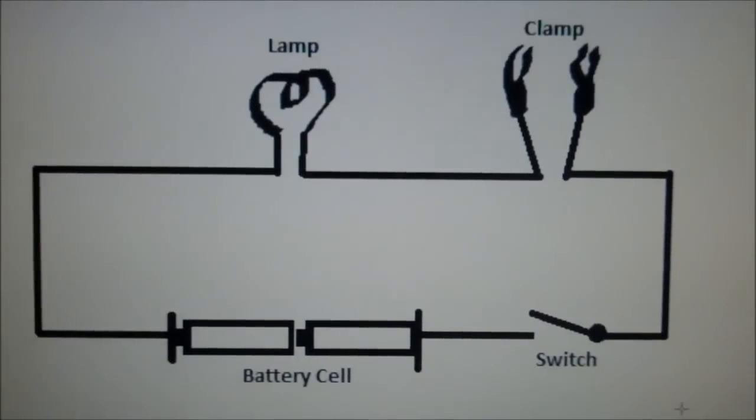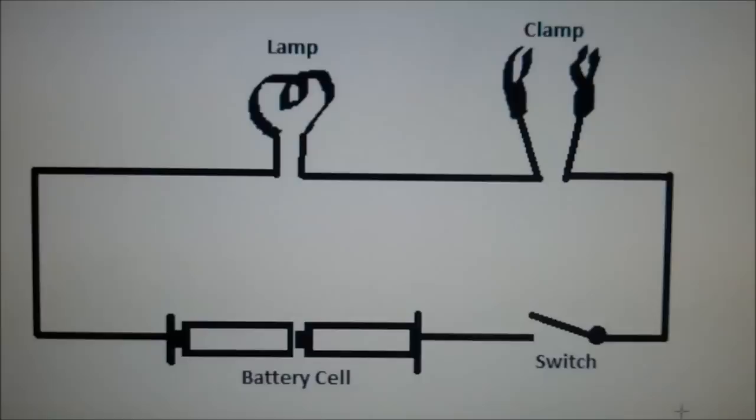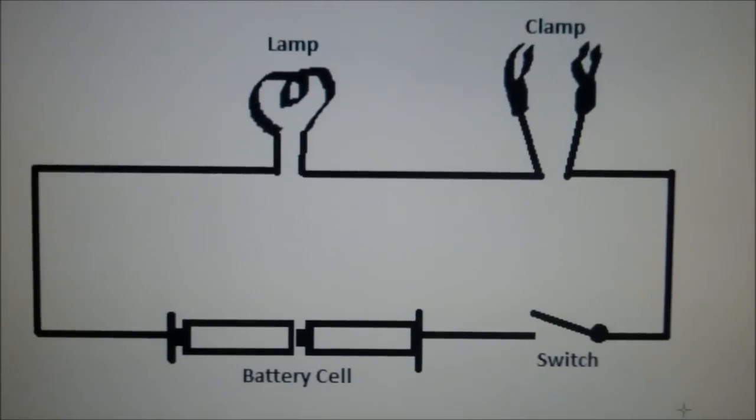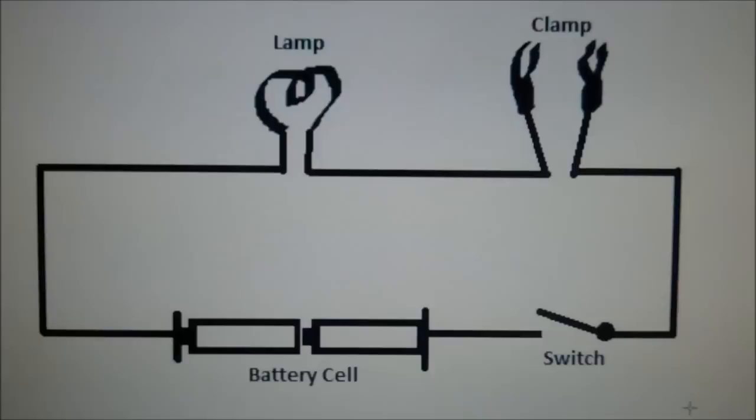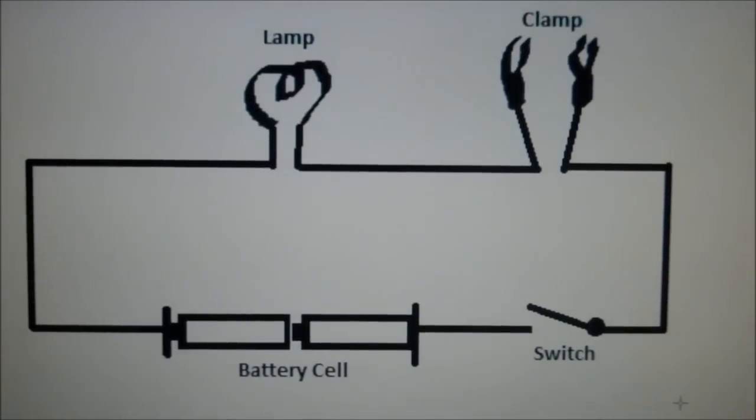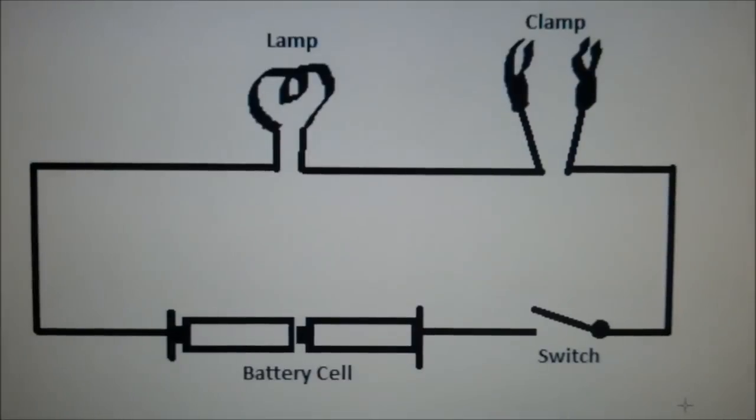This project is about which materials conduct electricity. The basic circuit has two AA battery cells connected to a lamp, then to two clamps, and then a switch to turn the circuit on and off.